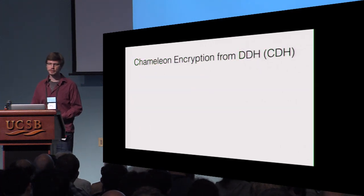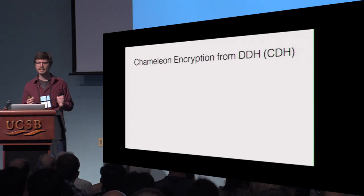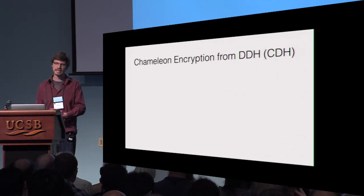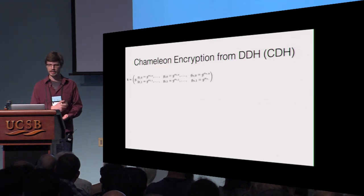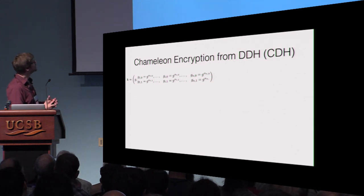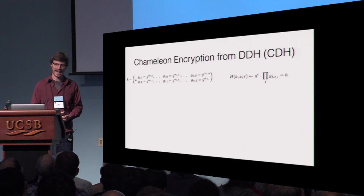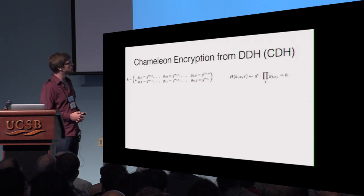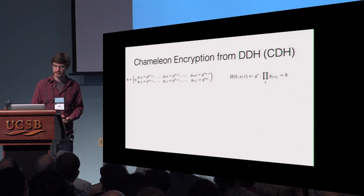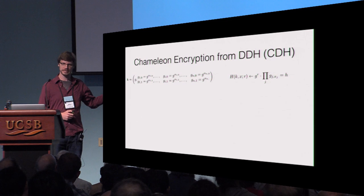Now I'm going to show you a simple construction of chameleon encryption from the DDH assumption. In the paper, we can actually do this from the CDH assumption, but for the sake of brevity, I will provide the simplified DDH construction here. The hashing key consists of a group generator g together with n pairs of group elements g_{i,0} and g_{i,1}. The hashing algorithm first computes g^r and then the product of g_{j,x_j}. That's the output of the chameleon hash function. I'm not going to provide the collision-finding algorithm on this slide; for details, please refer to the paper.